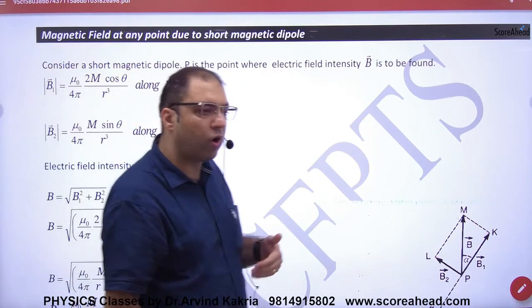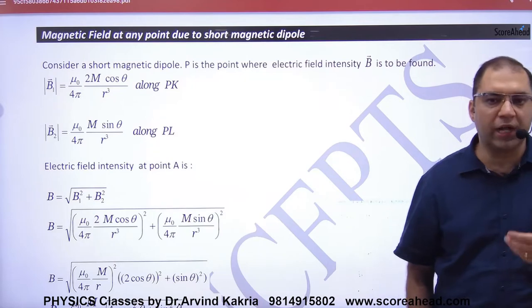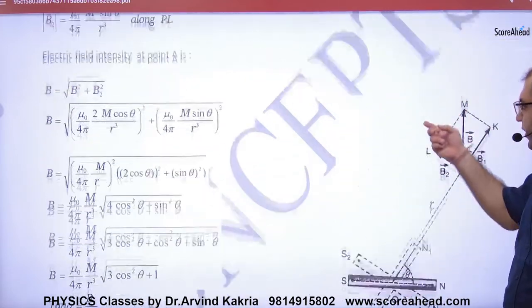Magnetic field at any point due to short magnetic dipole. Remember that in electrostatics we had done this topic. It's a dipole and we had E on top of any point.